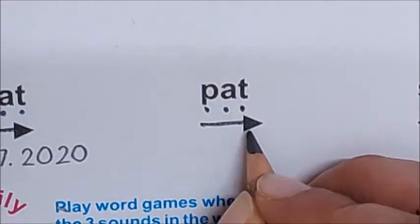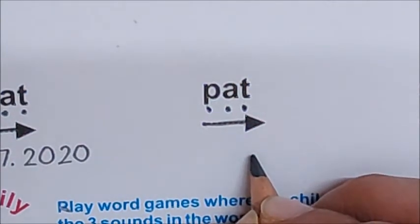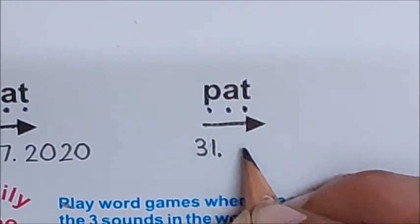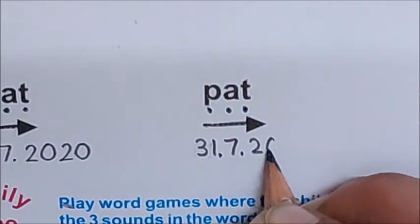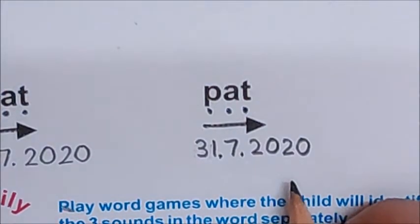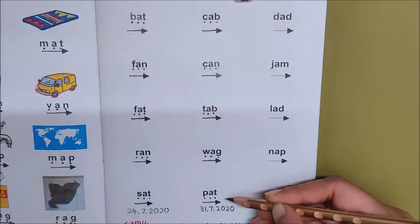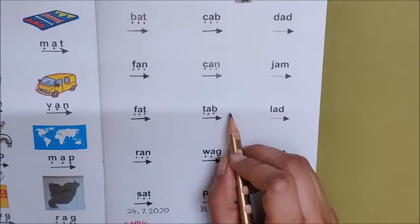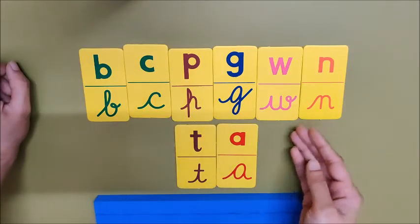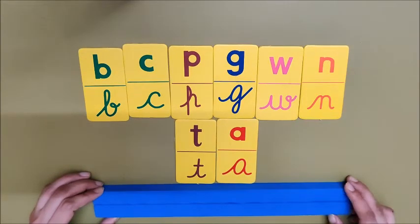Now after reading all these words, we have to write down today's date below the word pat. So today is July 31, children. After writing this date, you have to make all these words on the alphabet kit stand. Take out all the cards from your alphabet kit and also you need your stand.